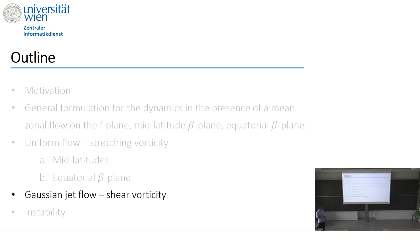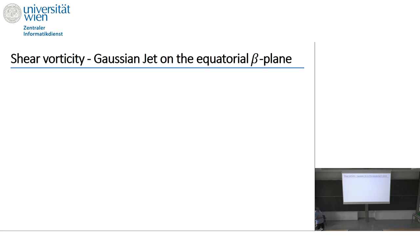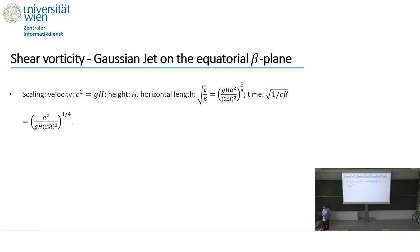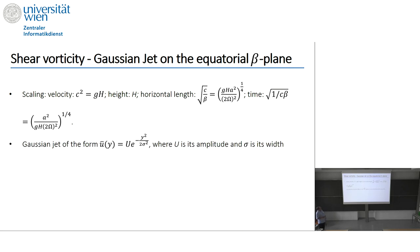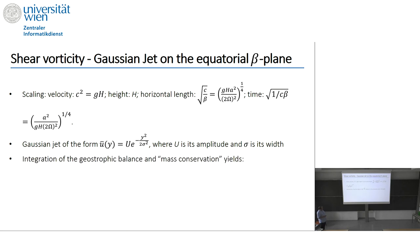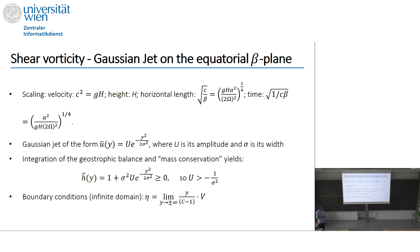Now if we go to a non-uniform mean flow, we choose a Gaussian jet profile. We use Matsuno's exact scaling, so the problem has only two parameters: the amplitude U and the width sigma of the mean flow. Again we integrate the geostrophic balance to get the expression for H-bar, and the limitation on U is less significant since u is most of the time positive.